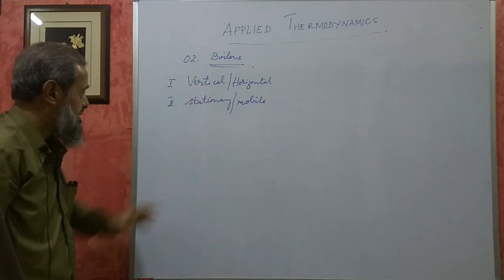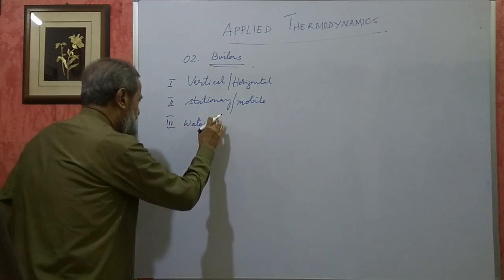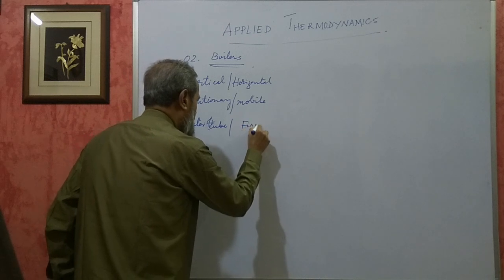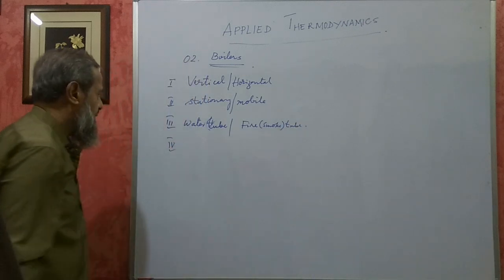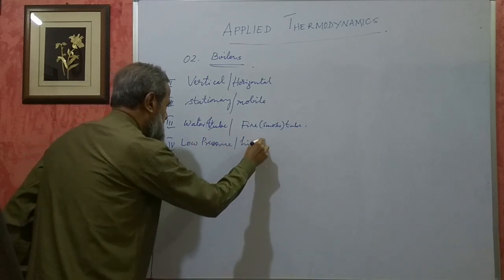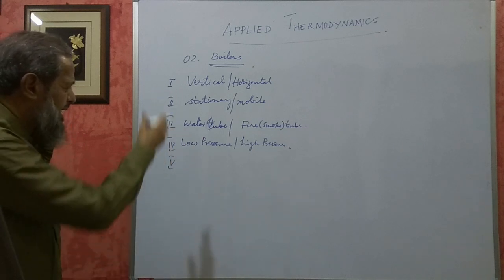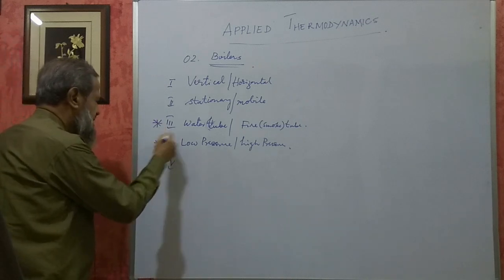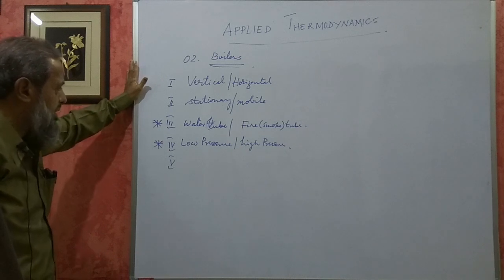Lancashire boiler, Cochrane boiler, etc. are stationary boilers. Then you have water tube boilers and fire or smoke tube boilers — that is another classification. Then you have low pressure and high pressure boilers. The most important classification to understand is the differences, advantages, disadvantages, and comparison between water tube boilers and smoke tube or fire tube boilers.